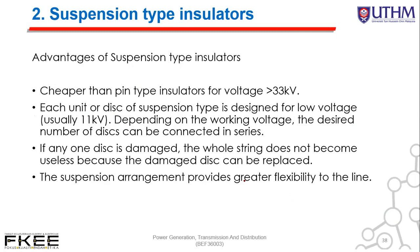Advantages of the suspension type insulator: first, it is cheaper than pin type for voltages above 33 kV. Second, each unit or disc is designed for 11 kV, so the desired number of discs can be connected in series depending on the working voltage. Third, if only one disc is damaged, the whole string does not become useless because the damaged disc can be replaced. The suspension arrangement also provides greater flexibility to the line.